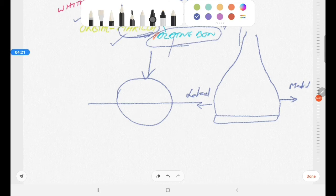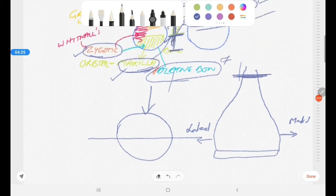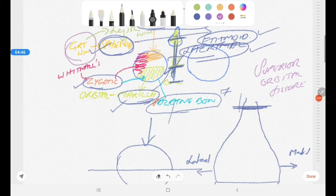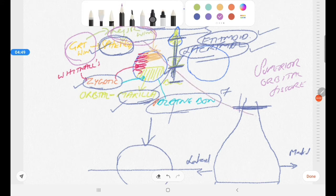At the area where the orbit is ending posteriorly, we have an important fissure in the name of superior orbital fissure. It is actually a space formed between the greater wing and the lesser wing of sphenoid.